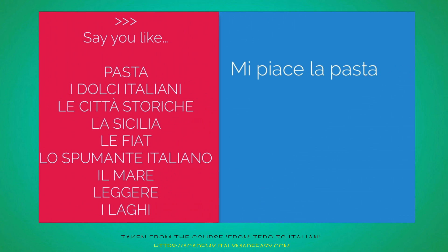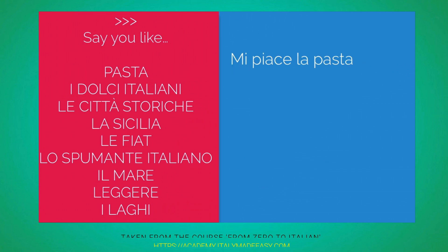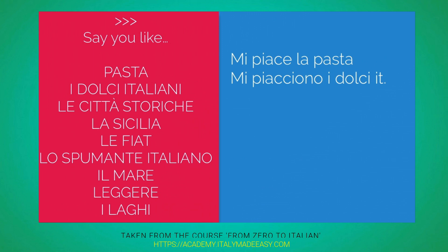How about i dolci italiani? Still I like, because it's still by yourself. Mi piacciono i dolci italiani — I like Italian desserts. Common mistakes again would be io, and piacciono — maybe you forgot to say piacciono. But why are we saying piacciono? Because what's pleasing to me is Italian sweets, which is a plural, so they are pleasing, so piacciono makes sense. As long as it's piacciono, you're right.